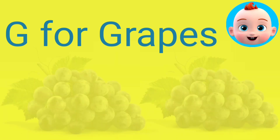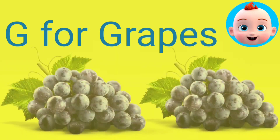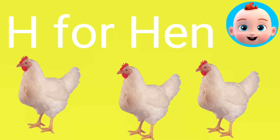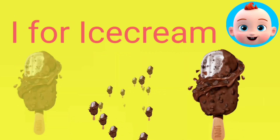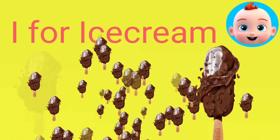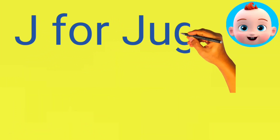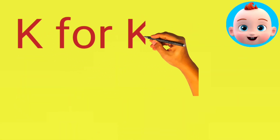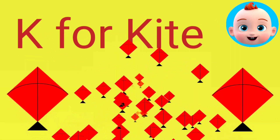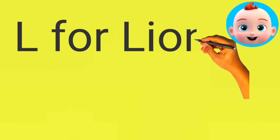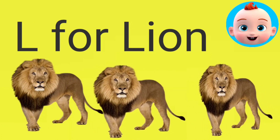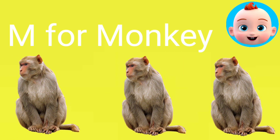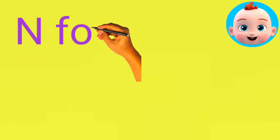G for grapes. H for hand. I for ice cream. J for jug. K for kite. L for lion. M for monkey. N for nest.